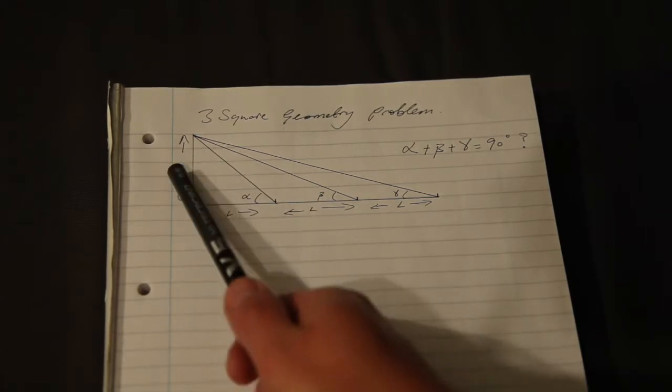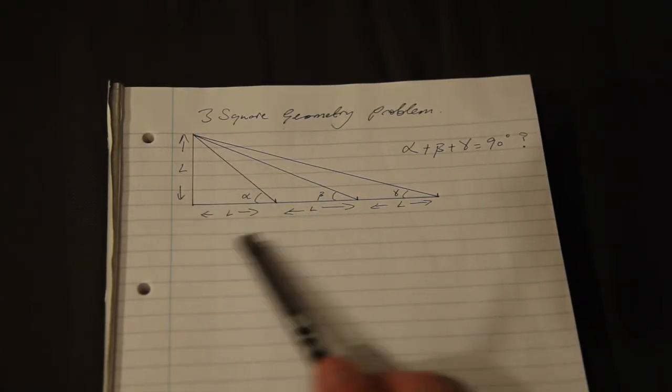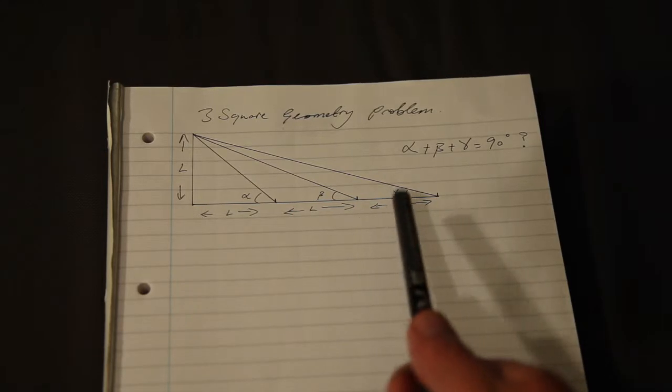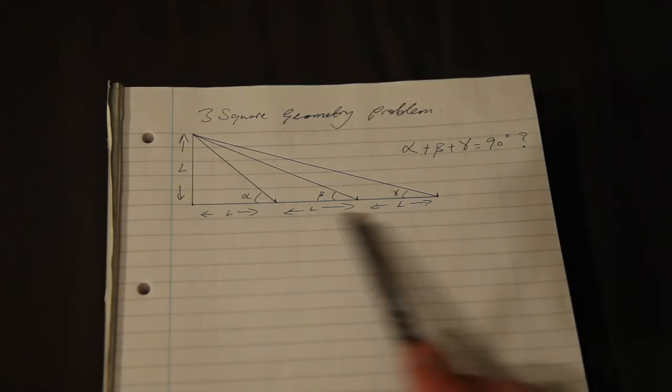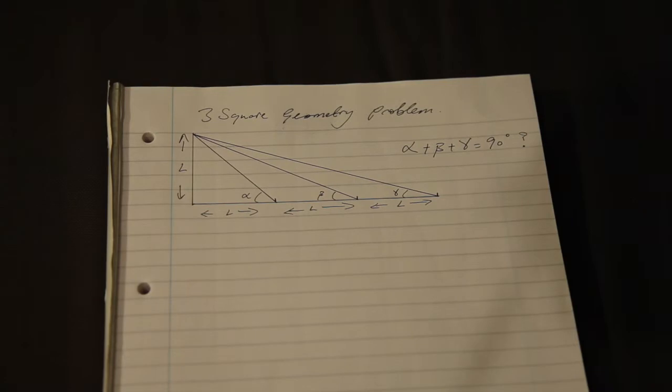For beta, the opposite to the adjacent is a one-to-two ratio, and for gamma, the opposite to the adjacent ratio is a one-to-three ratio.